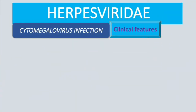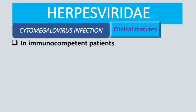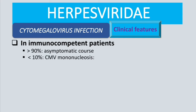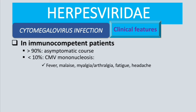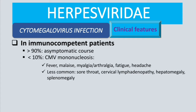Let's look at clinical features, dividing them by immune status. In immunocompetent patients, about 90% of cases are asymptomatic. In less than 10% of cases, patients present with CMV mononucleosis — also called mono-like symptoms — which include fever, malaise, myalgia, arthralgia, fatigue, and headache.